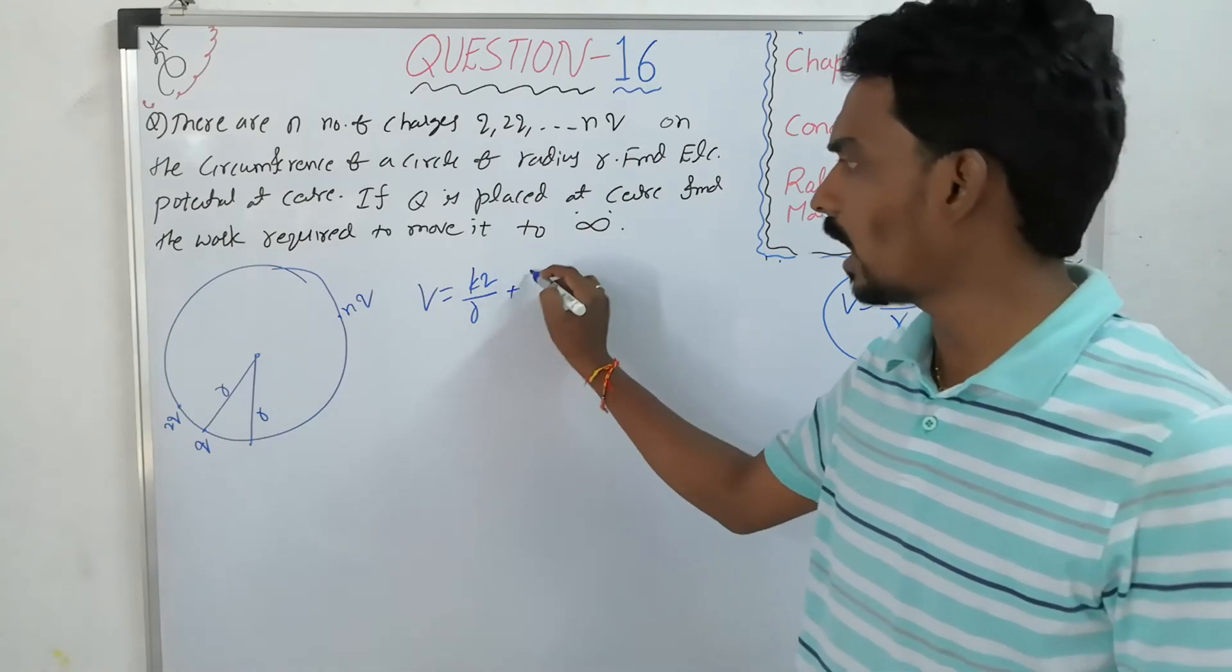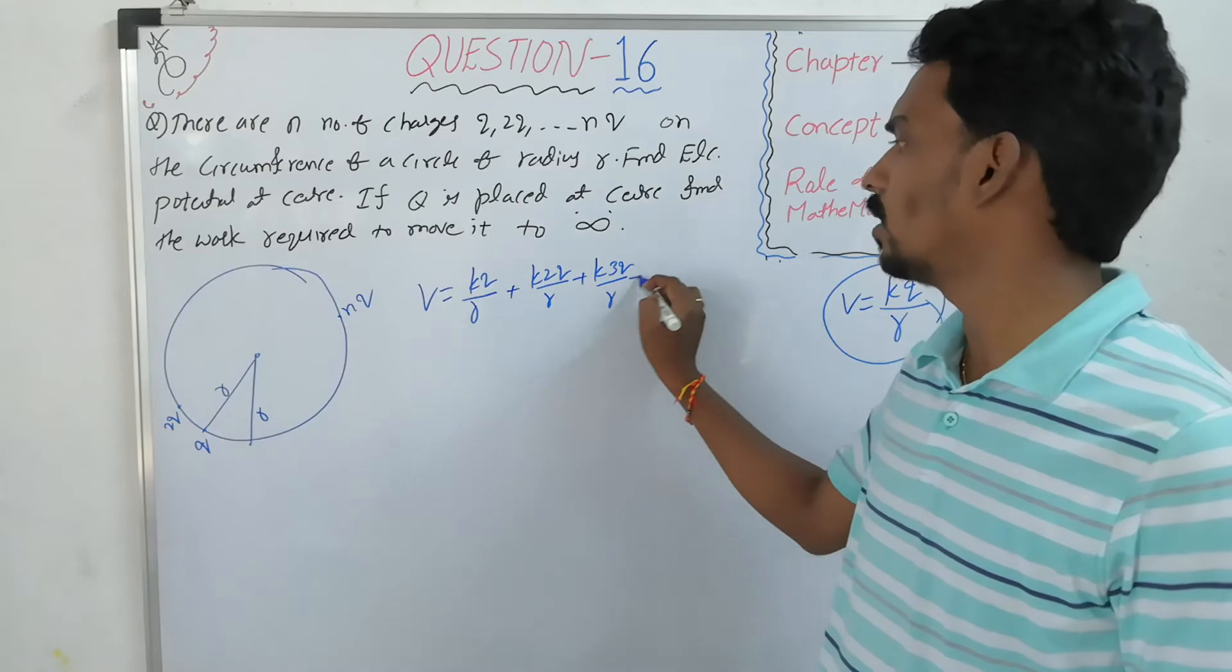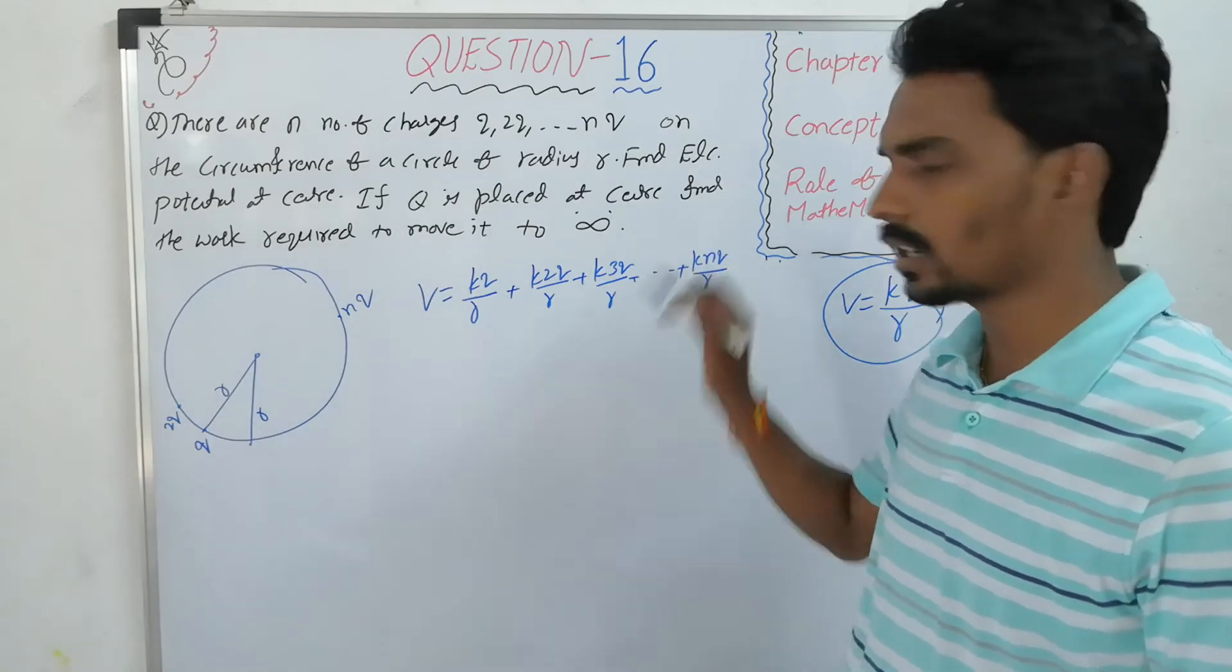So KQ by R, K times 2Q by R, K times 3Q by R, and so on, up to K times nQ by R.